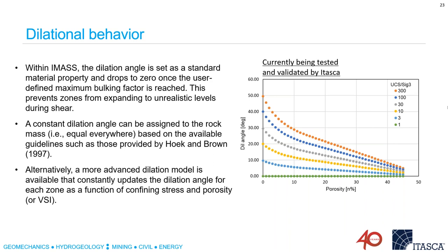You showed how the brittle-ductile transition can be captured by the strength envelope formulation. Have you confirmed that using a GSI of 100 and UCS and mi representative of a crystalline silicate rock gives a reasonable brittle-ductile transition in agreement with Mogi's line? Yes — if you set those anchor points into the constitutive model, then you can play with the basic friction angle, and you can definitely get the brittle to ductile transition in line with what Mogi would suggest.